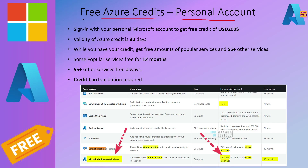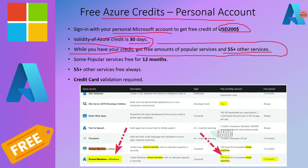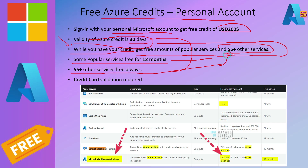The first option gives you $200 USD free credits when you use your personal Microsoft account to sign in and create an Azure account. The validity is 30 days. With that credit, you get access to 55-plus popular services for free, and some popular services are free for 12 months. However, you need a valid credit card, which Microsoft will validate along with your phone number.